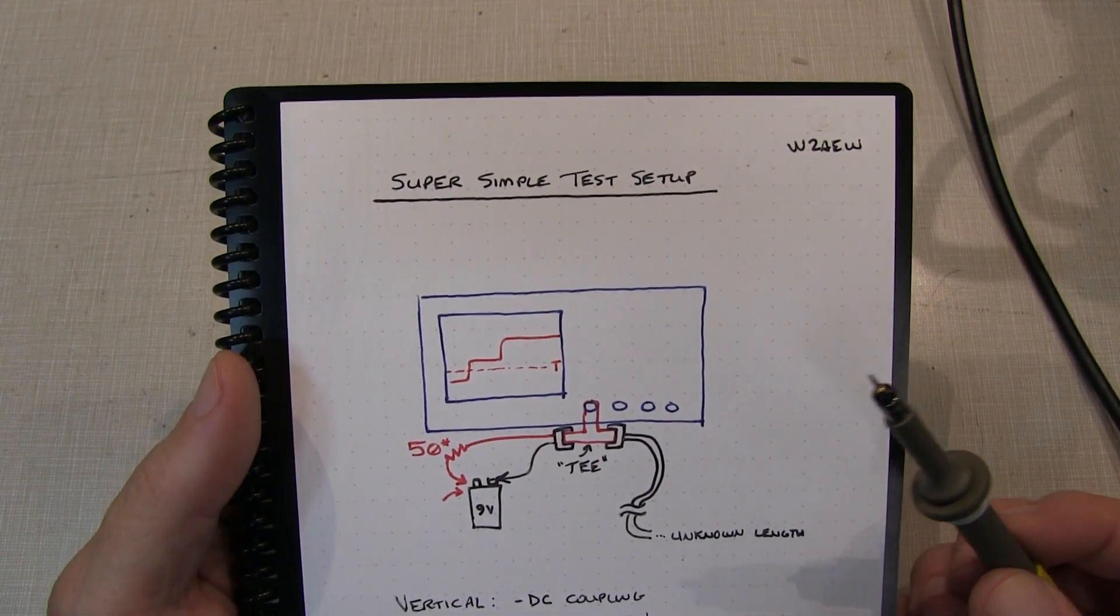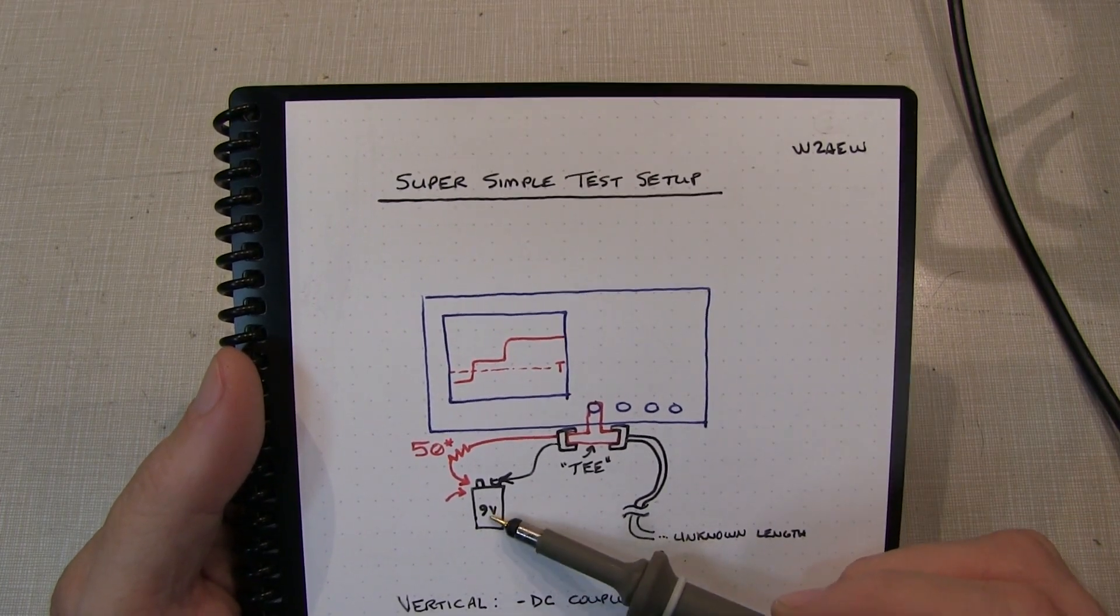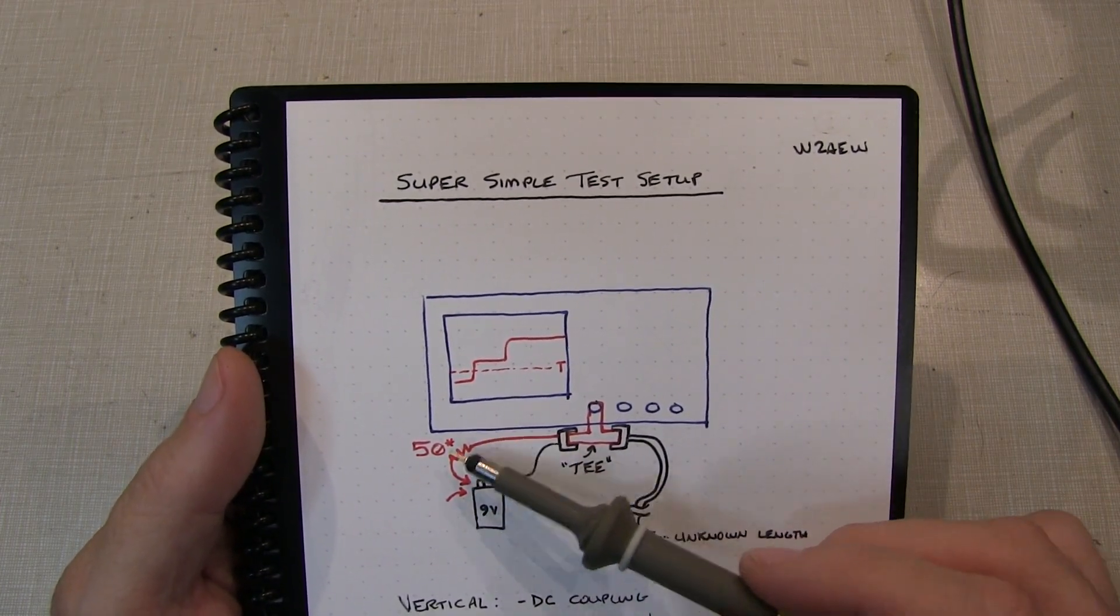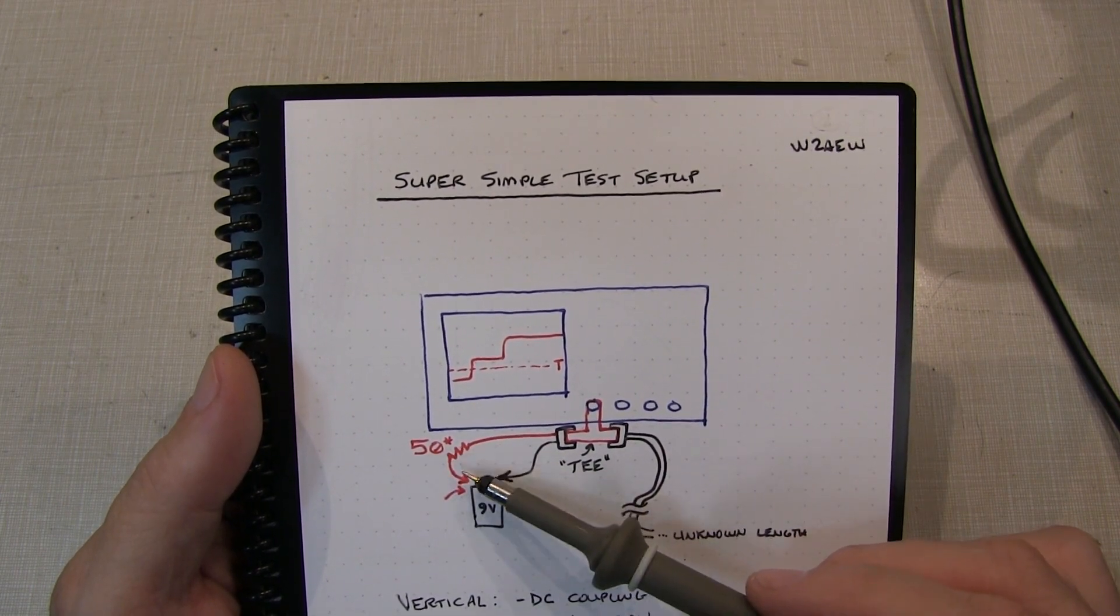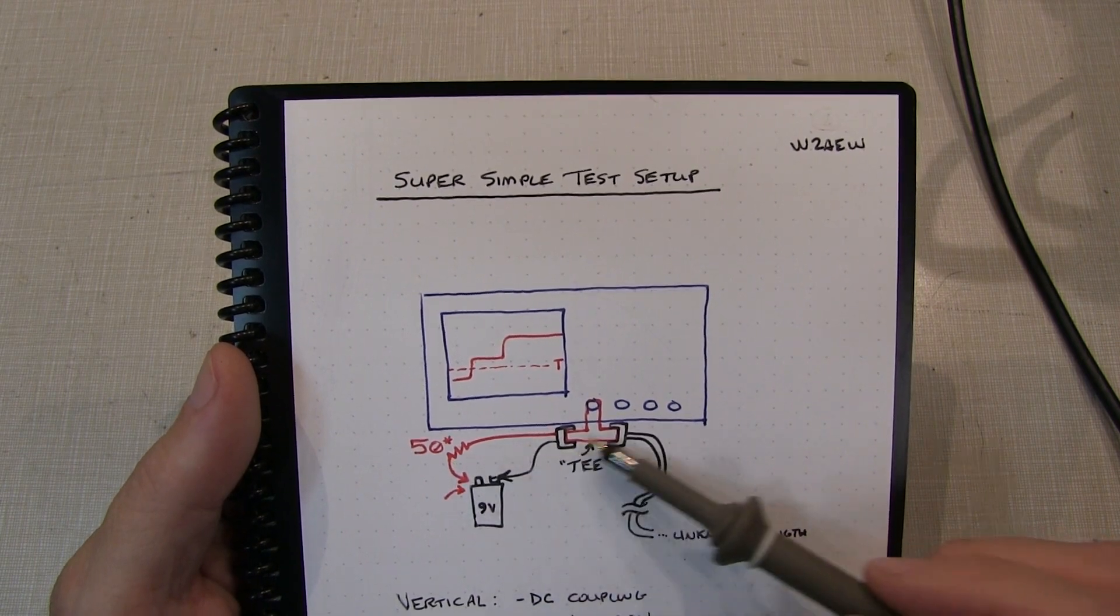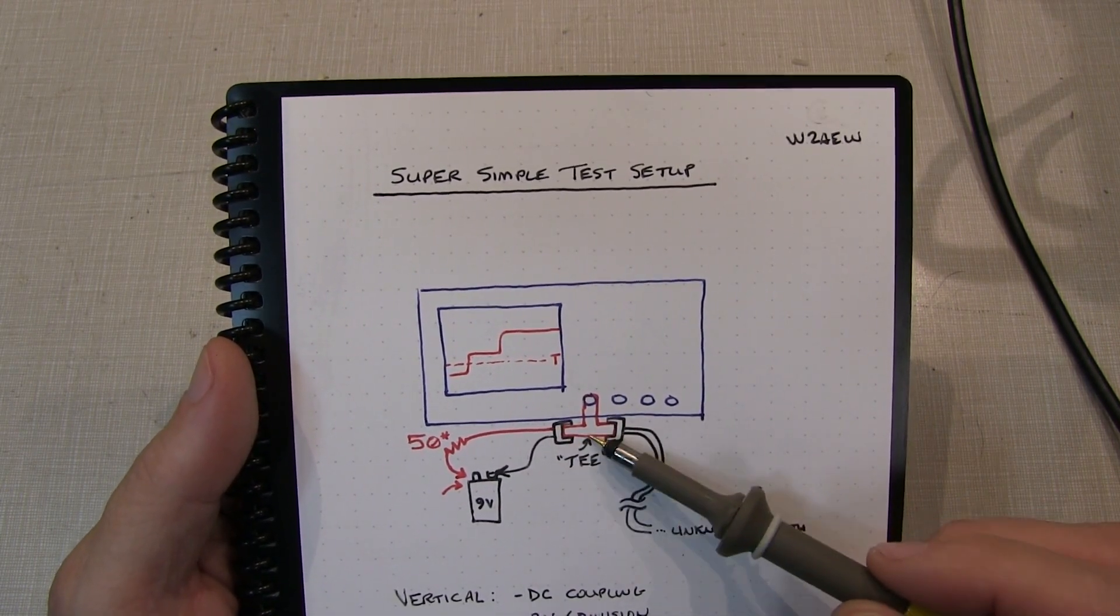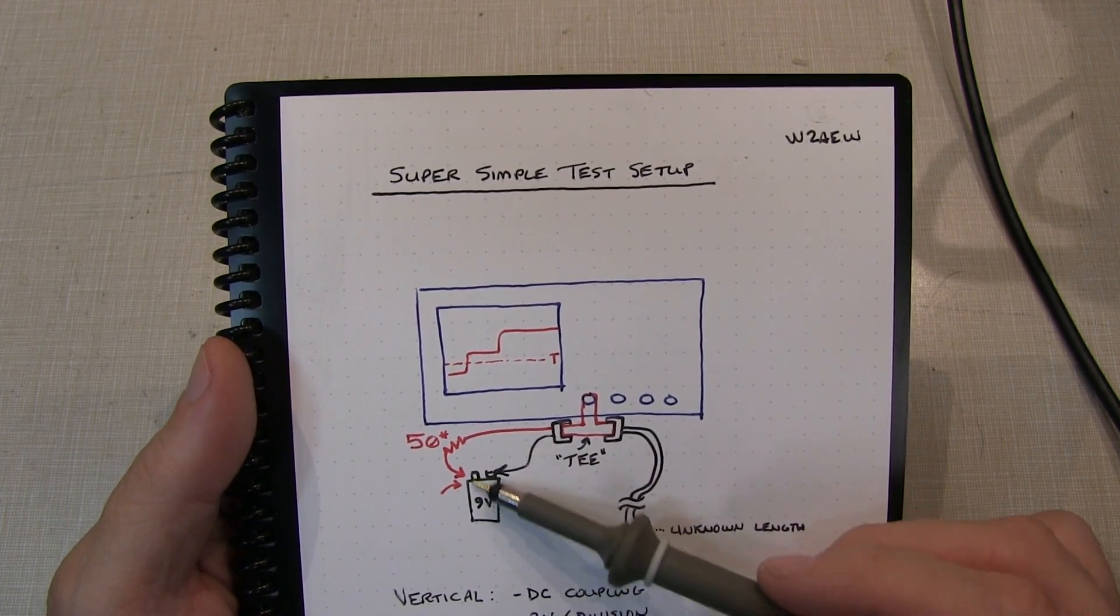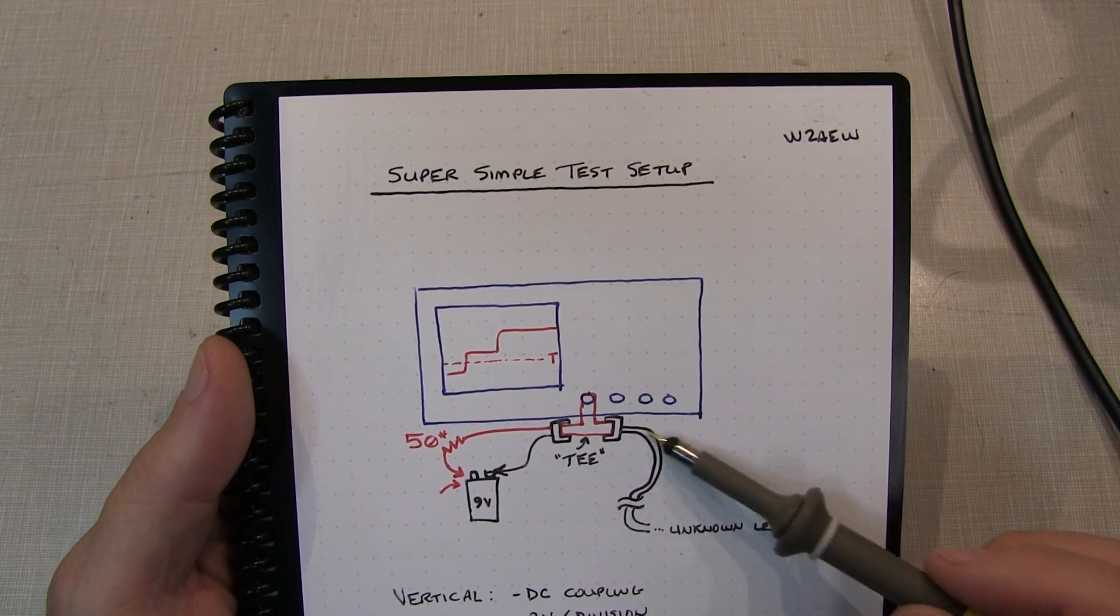Now here's our super simple TDR setup. You've got a digital scope, and simply a 9-volt battery, maybe a couple of clip leads, and a resistor - 50 ohms, 100 ohms, value is not terribly important, and you just want it to be relatively close to the impedance of the line you're trying to measure. A little T to connect to your little 9-volt battery, and then to the unknown length of line that you want to measure.